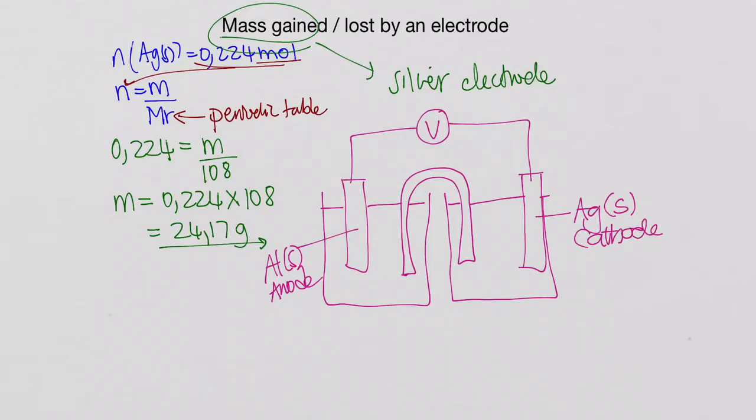So we've basically used these equations to work out the mass gained by the silver electrode. So this silver electrode on the right-hand side is going to gain 24.17 grams in mass. That's how much heavier it's going to become. So my question now to you.